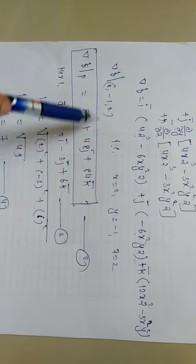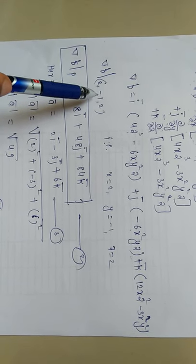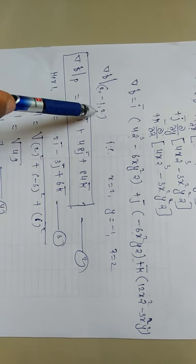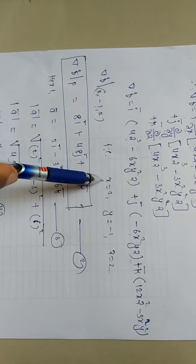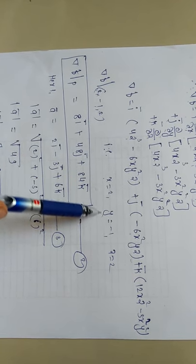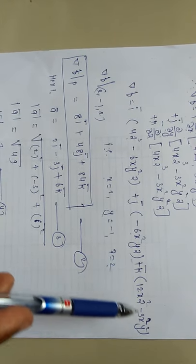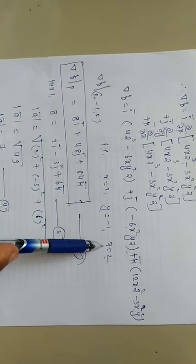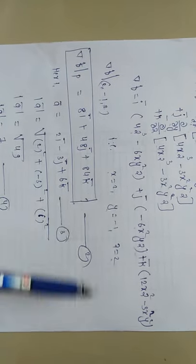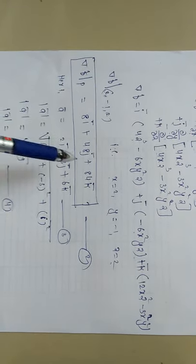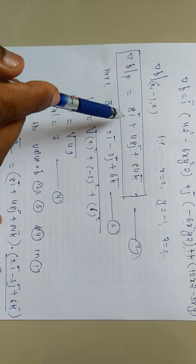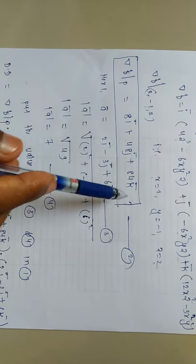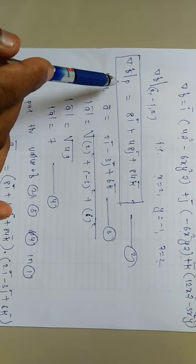Next we require del f at point P, where point P is given as (2, -1, 2). So x equals 2, y equals -1, and z equals 2. Substituting these values into the gradient expression and performing the calculations, we get del phi at point P equals 8i plus 48j plus 84k.